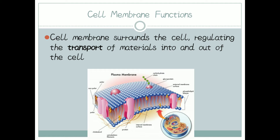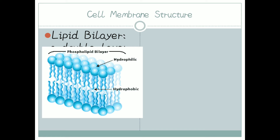Cell membrane is present in plant cells as well as in animal cells. So what is the basic structure of this cell membrane? As we can observe here, the cell membrane surrounds every cell. Its function is to regulate the transport of material in and out of the cell. The basic structure of the cell membrane is a lipid bilayer structure.